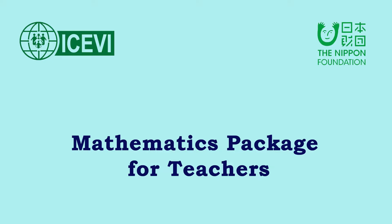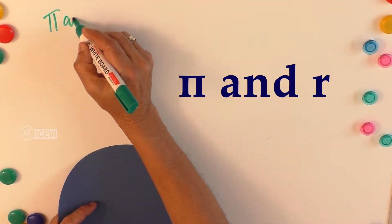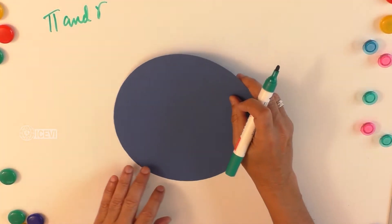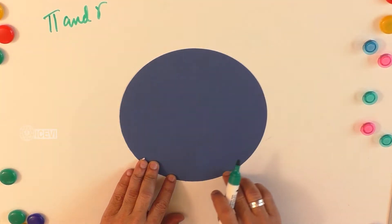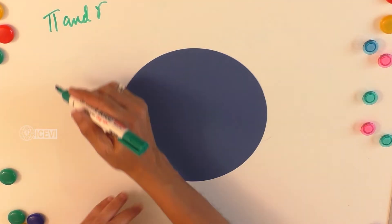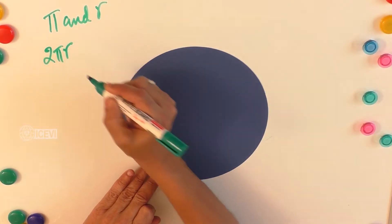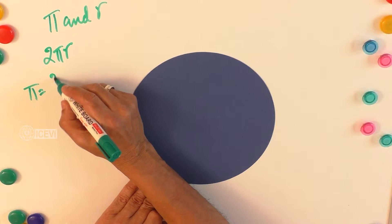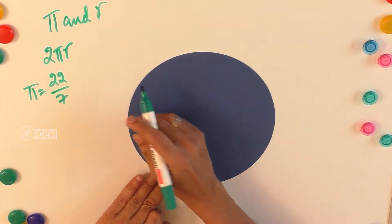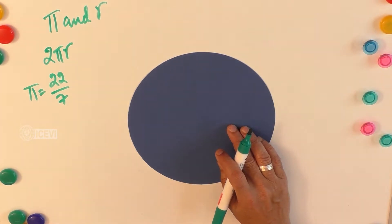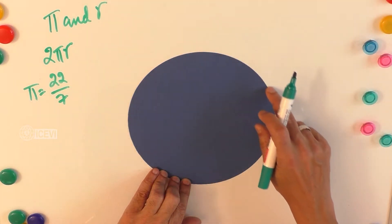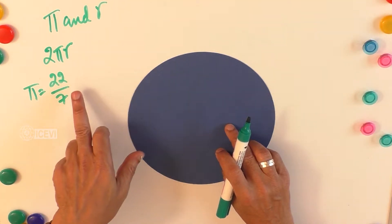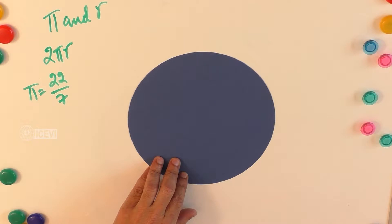This is the ICBI Nippon Foundation mathematics package for teachers. The title of the video is 'PI and R.' In using a circle, we always refer to PI and R. To find the circumference, we use the formula 2πr, where PI is a constant equal to 22/7. There is a relationship between PI and R, and children can be given a practical experience of linking them.